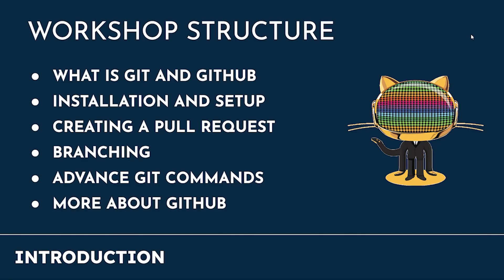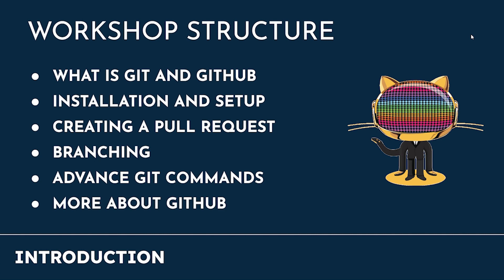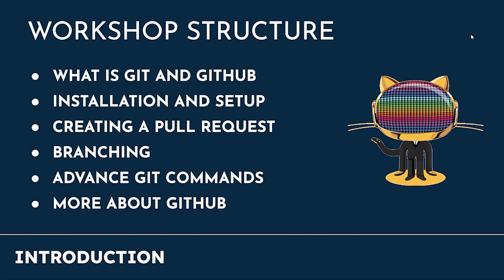Let me walk you through the workshop structure. First, we will be covering what is Git and GitHub, and then we will be moving on to the installation and setup for both Windows and Mac. After this, we will be learning about pull requests, branching, advanced Git commands, and then we will end with more stuff about GitHub.